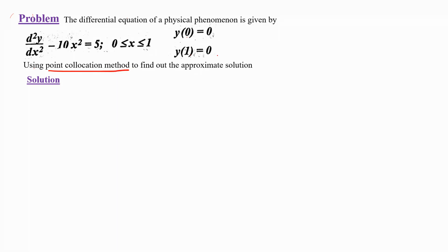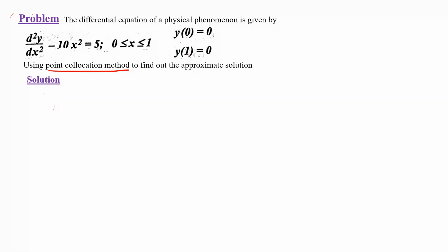Using the point collocation method to find the approximate solution of the given differential equation. The approximate solution means y(x). To find the approximate solution y(x), we choose a polynomial function. I have chosen the polynomial function y(x) = a₀ + a₁x + a₂x², which is a quadratic form.